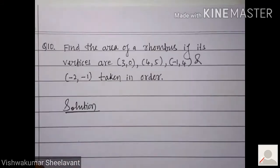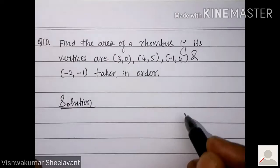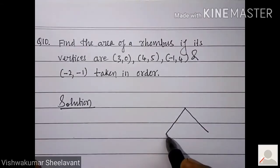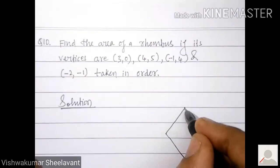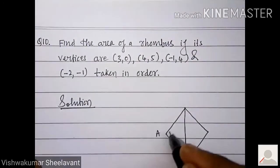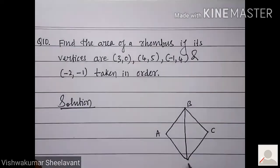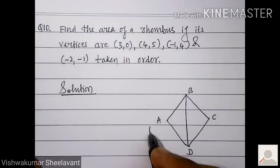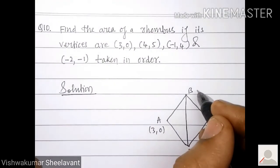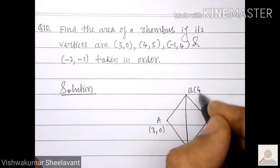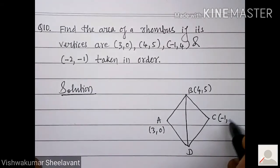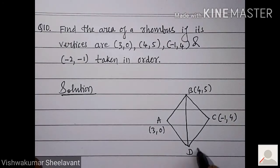Solution. We will show here one rhombus A, B, C, D. Coordinates of A are (3, 0). Coordinates of B are (4, 5). Coordinates of C are (-1, 4). Coordinates of D are (-2, -1).